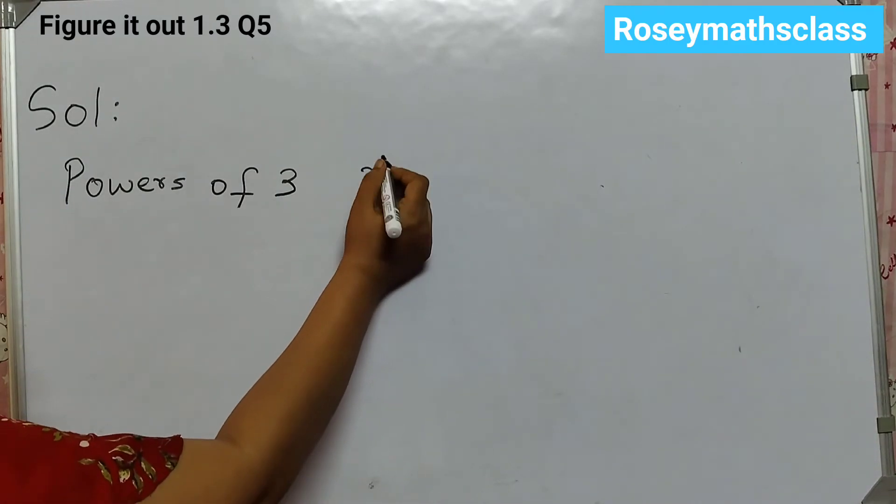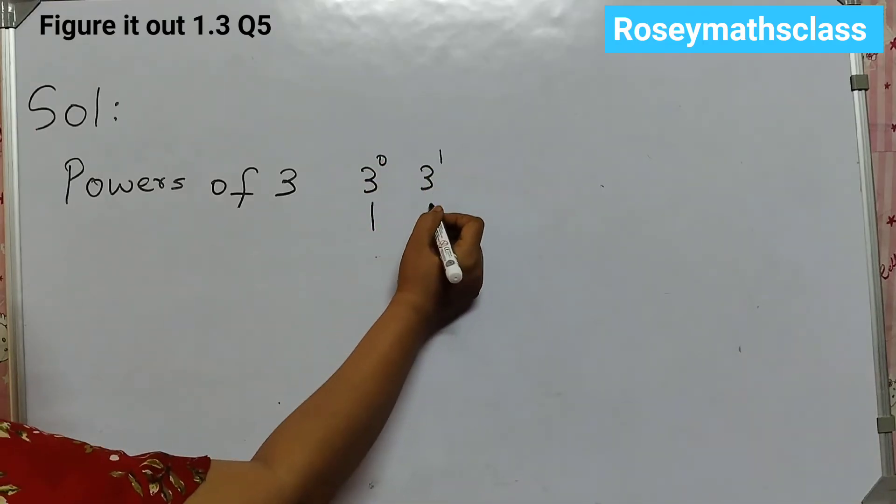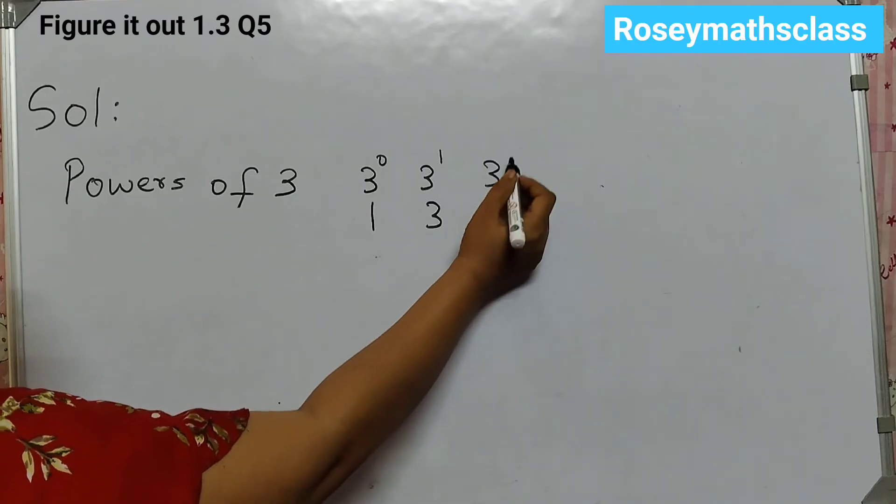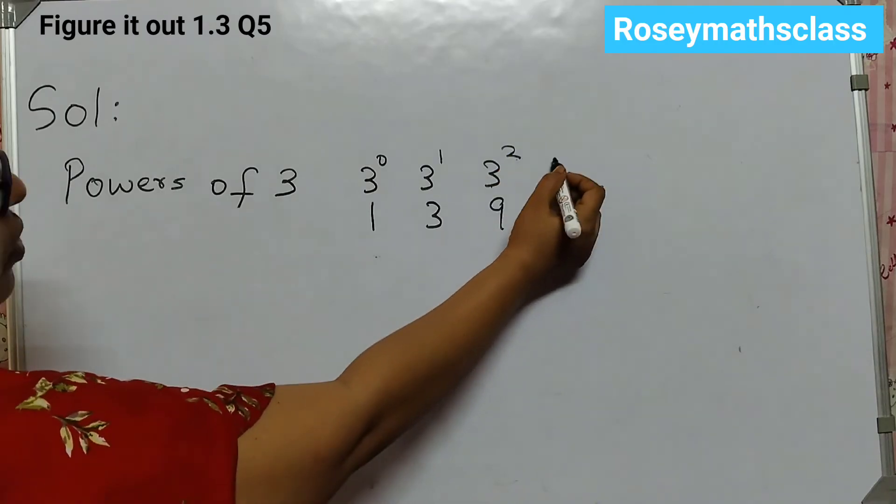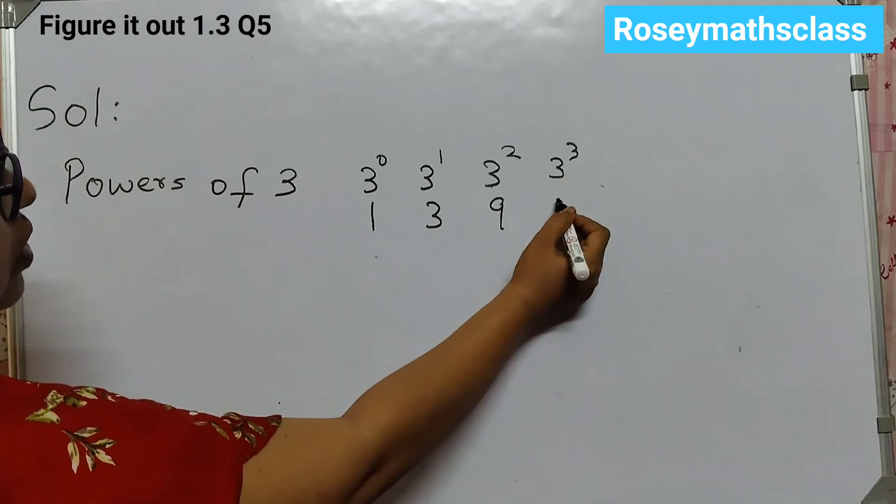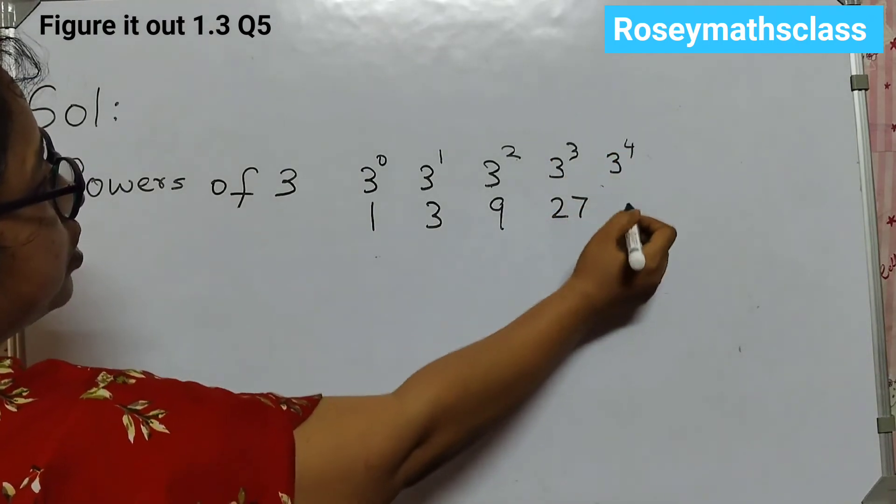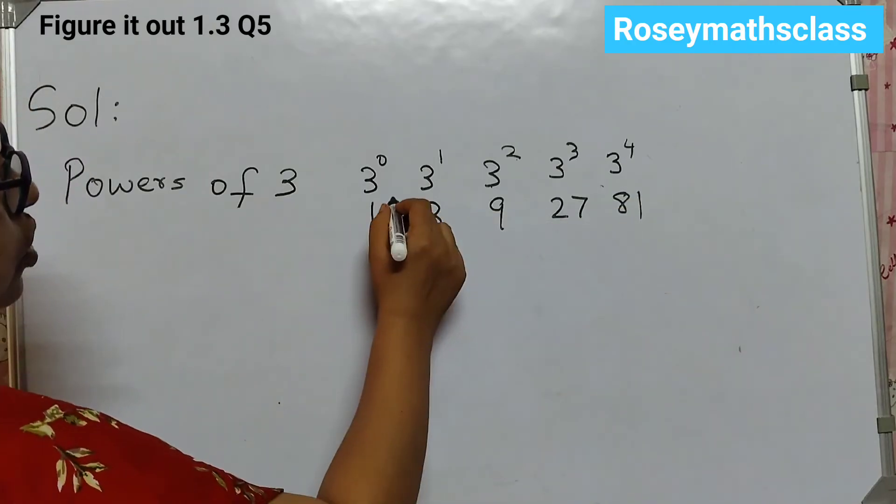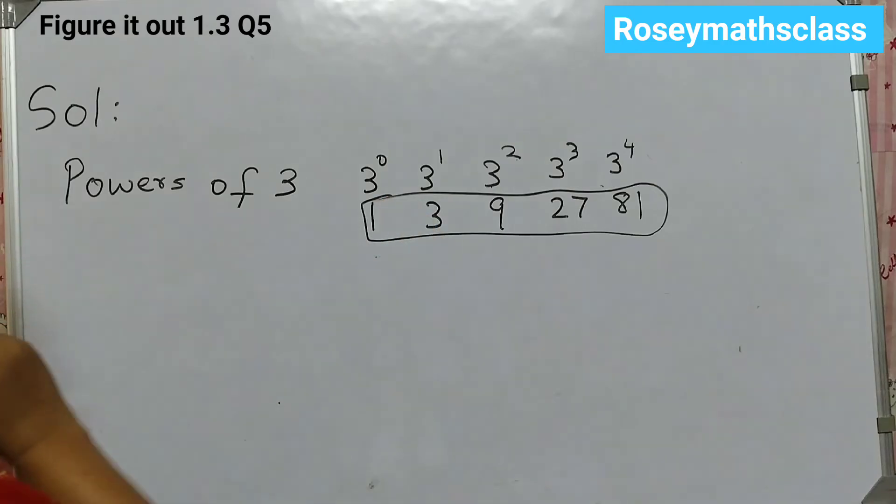Powers of 3 are 3 to the power of 0, which is equal to 1. 3 to the power of 1, which is 3. 3 to the power of 2. That means 3 is multiplied 2 times, 9. 3 to the power of 3, which is 27. 3 to the power of 4, which is 81.